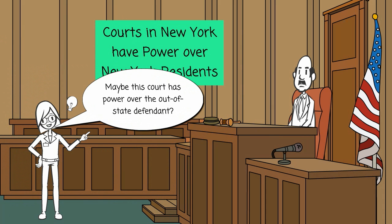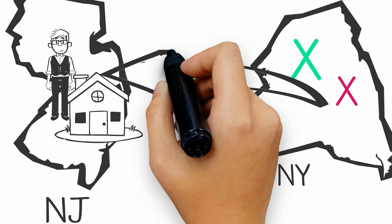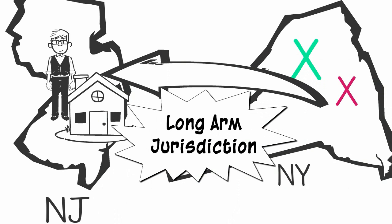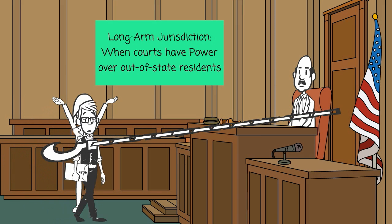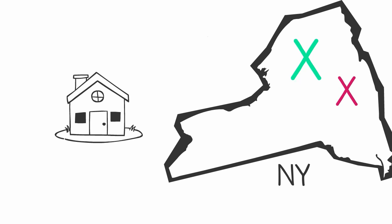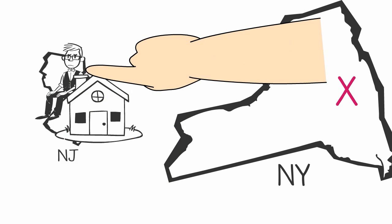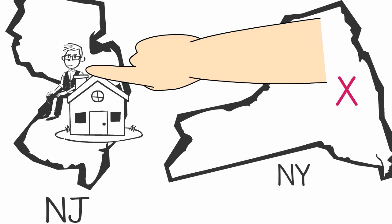Sometimes in the United States, a court in one state will assert personal jurisdiction over a defendant who resides in a different state. When a court asserts personal jurisdiction over an out-of-state party, we call it long-arm personal jurisdiction. New York might be able to assert long-arm personal jurisdiction over David. If a court asserts long-arm personal jurisdiction, even an out-of-state defendant like David will have to defend himself in court.